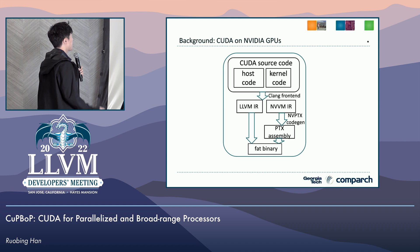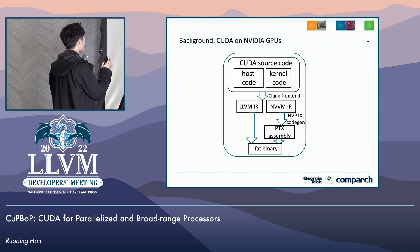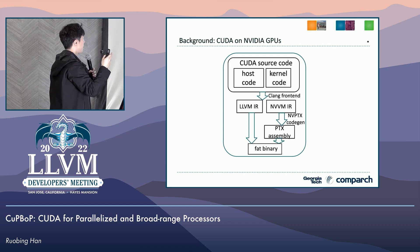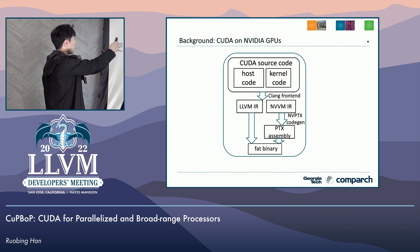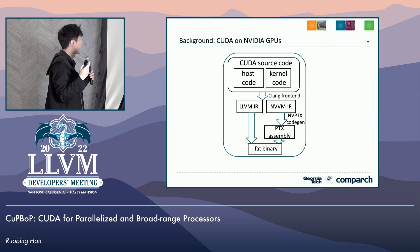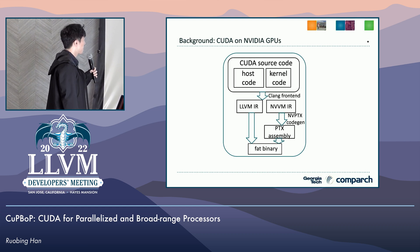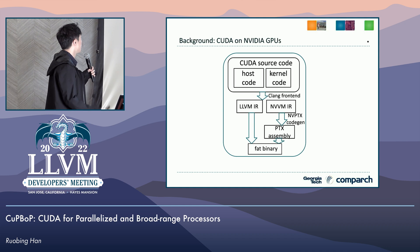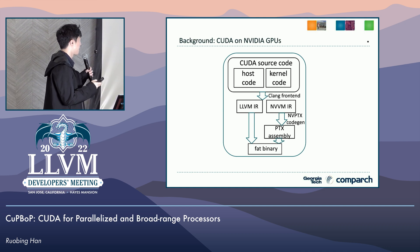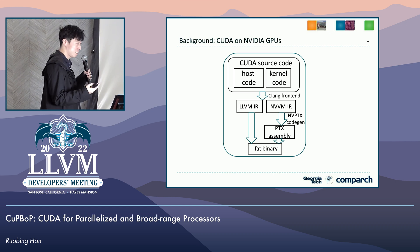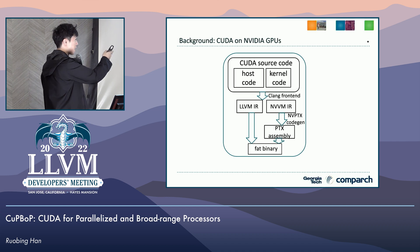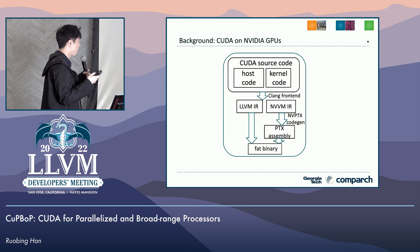For background, let's look at the pipeline for how CUDA is compiled for NVIDIA devices. First, we have CUDA source code containing host code and kernel code. Using the Clang front-end, it compiles to LLVM IR and NVVM IR separately. With the NVPTX code chain toolchain, the NVVM IR is compiled to PTX assembly. After that, we compile and link them together to generate final binaries executable on NVIDIA device systems.